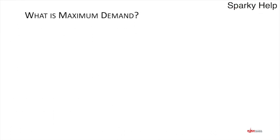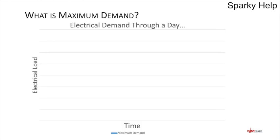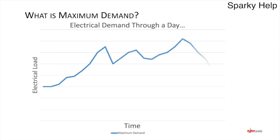So what is maximum demand? The maximum demand is the amount of electrical energy used throughout a period of time. Looking at the amount of electrical energy used throughout the course of a day, starting from first thing in the morning — as you get up you turn on kettles, your energy use will rise and fall throughout the day, finally peaking before going to bed, then dropping back down and the whole process starts again.